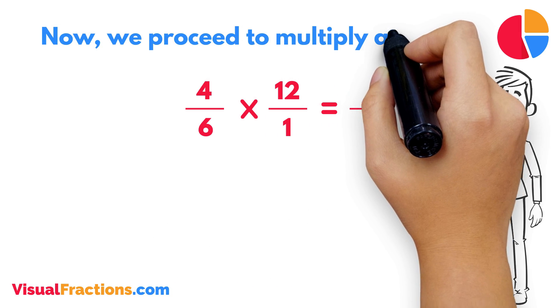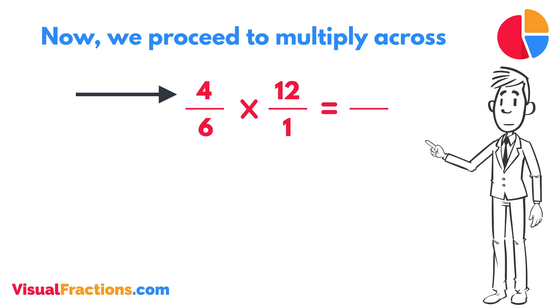Now, we proceed to multiply across. First, multiply the numerators: 4 times 12 equals 48.